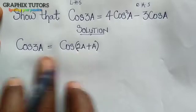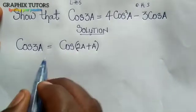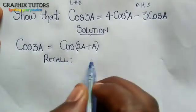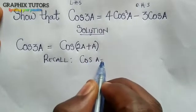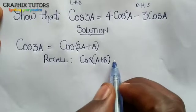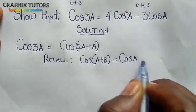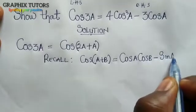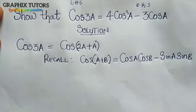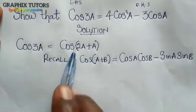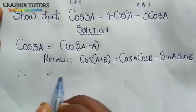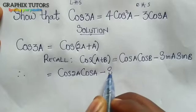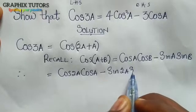Now, this is a compound angle, so we are going to expand it. Recall: when you have cos(a + b), when you have two different angles adding each other, it will give us cos a cos b, and the sign changes from plus to minus, so we are having minus sin a sin b. Therefore, we will now have this equal to cos 2a cos a minus sin 2a sin a.